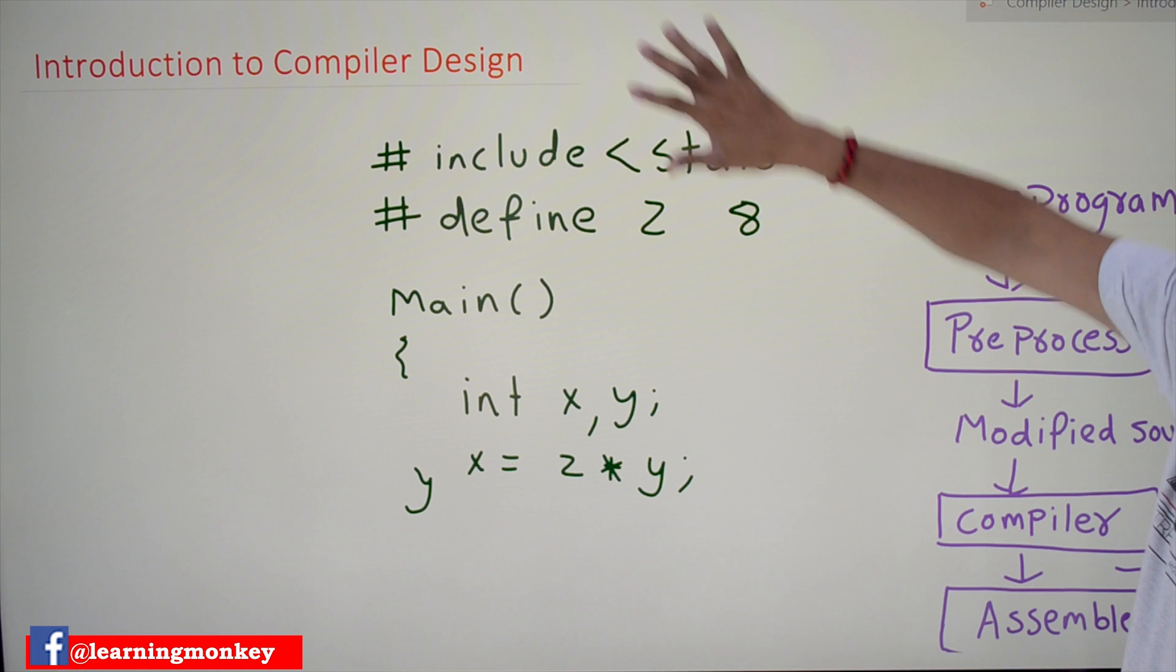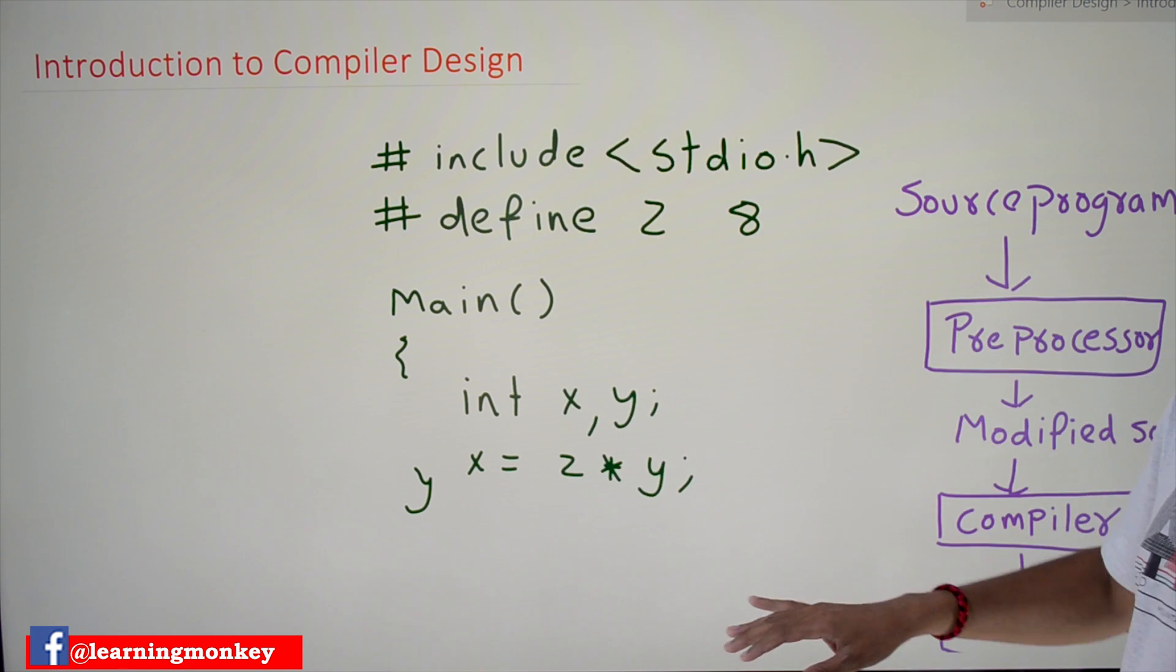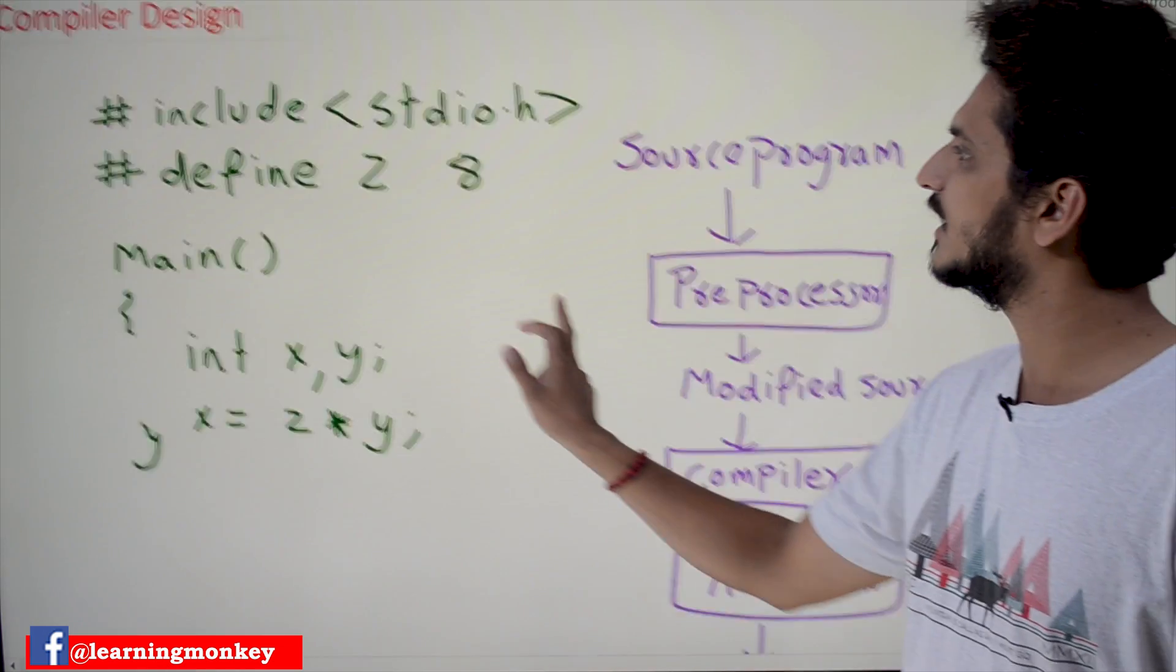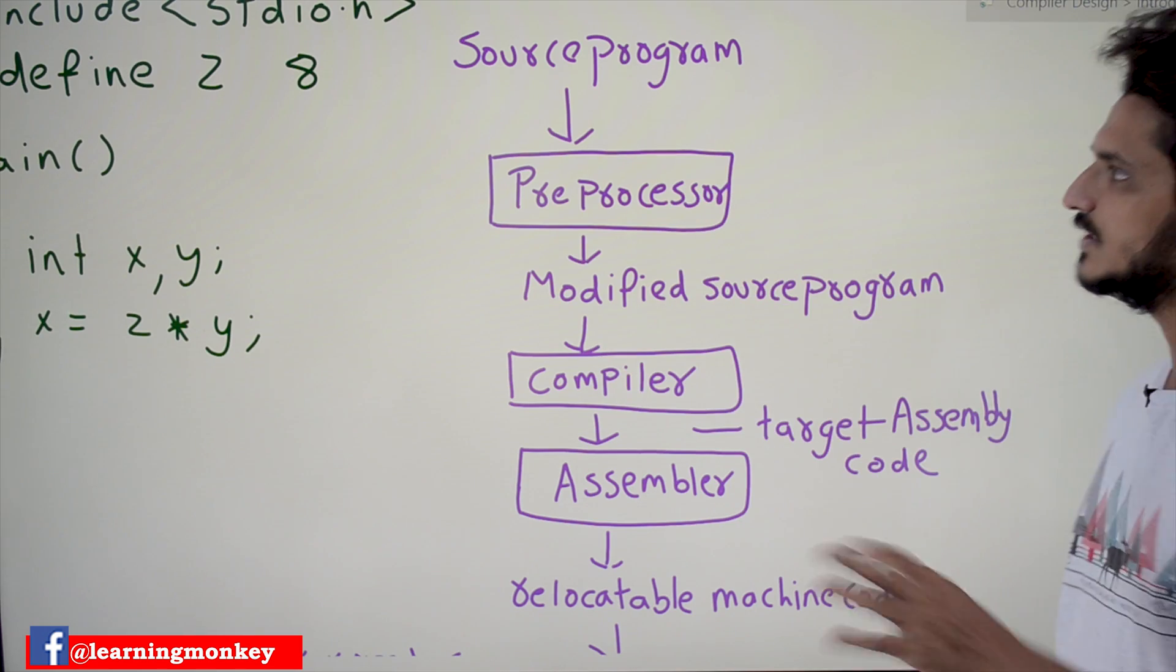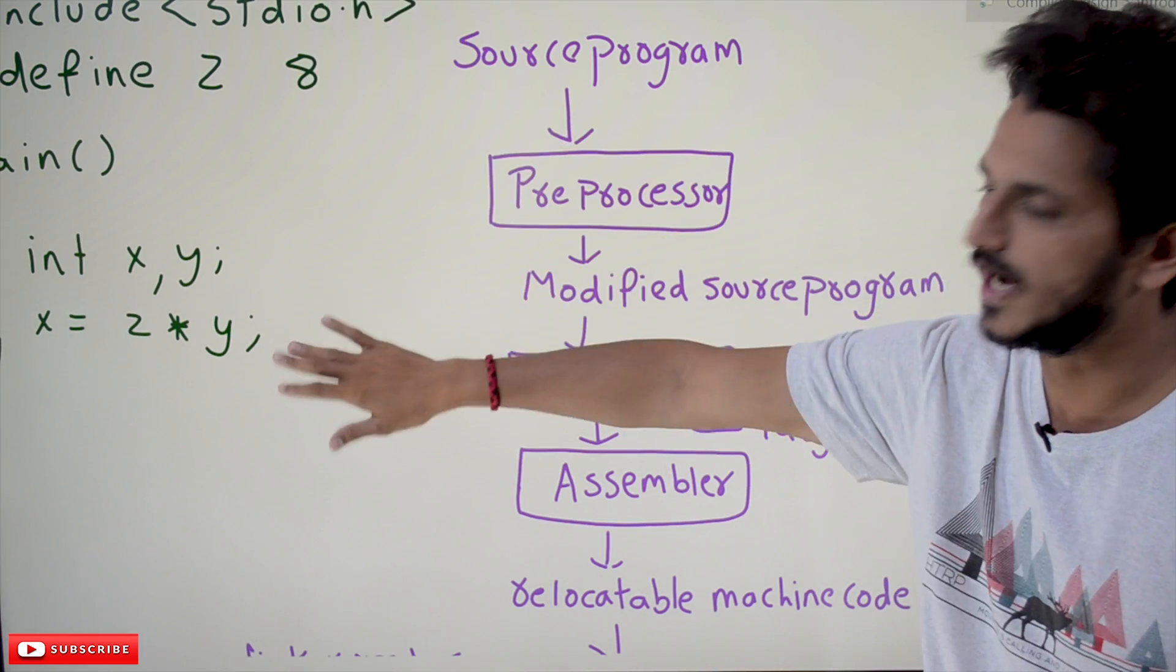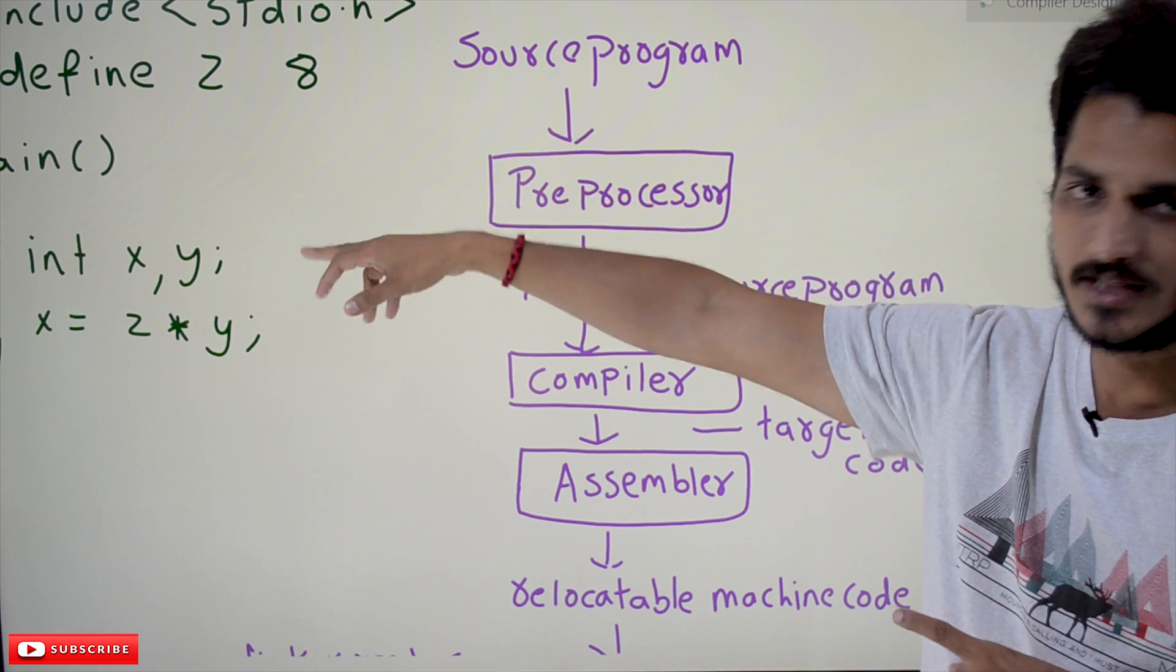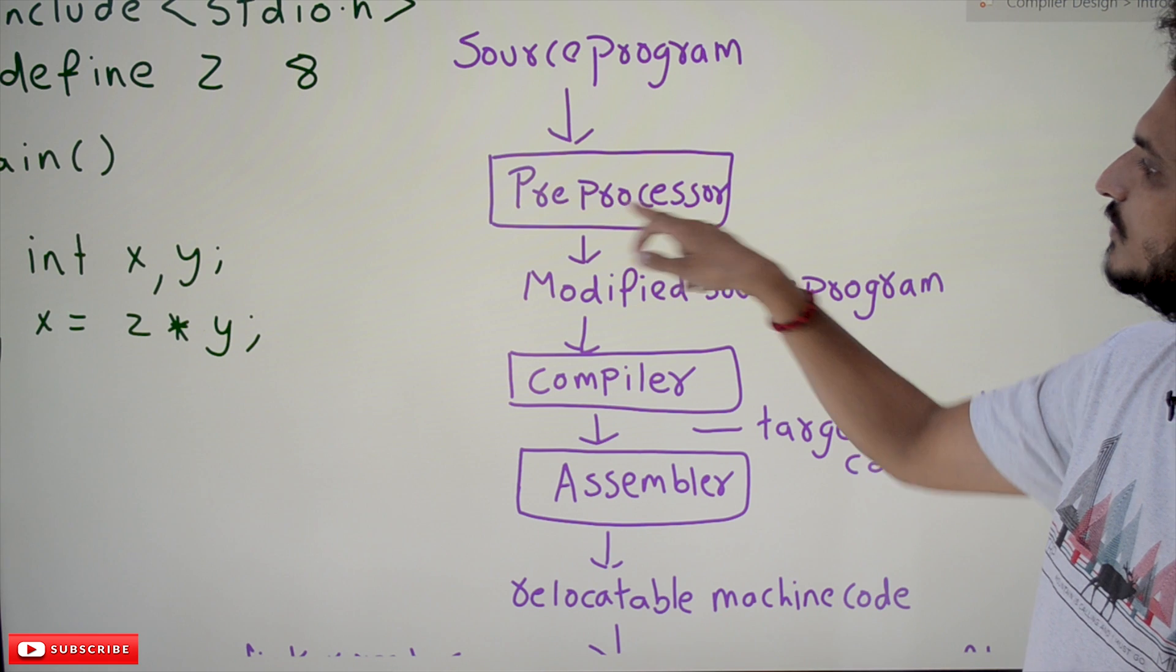Now we have to convert this total program into machine-level code. What happens? How is it getting converted? Which programs are taking care of all this conversion? Source program is the first high-level language which we have taken. That we call a source program. This is first given to preprocessor.